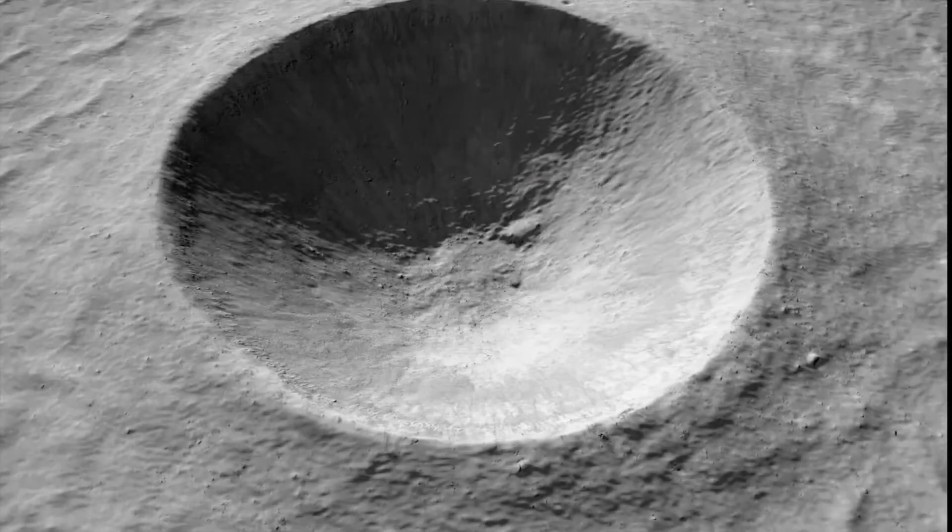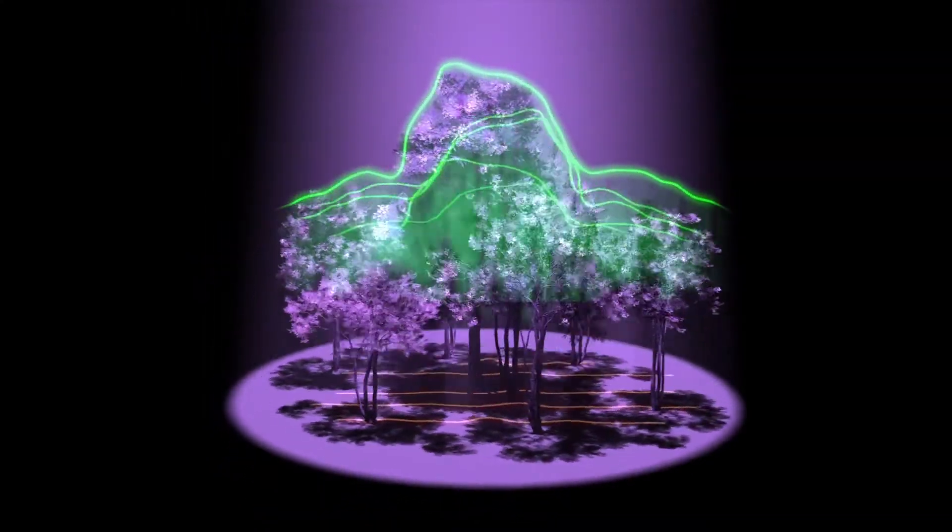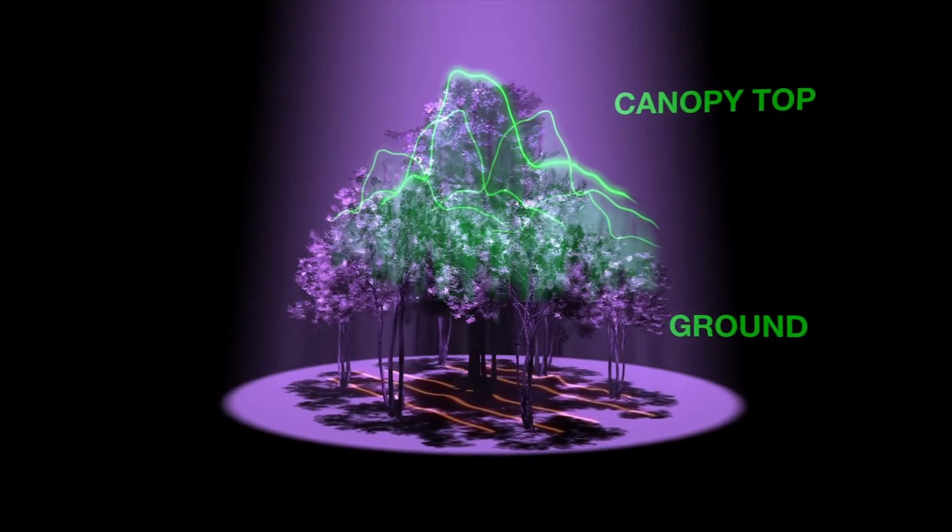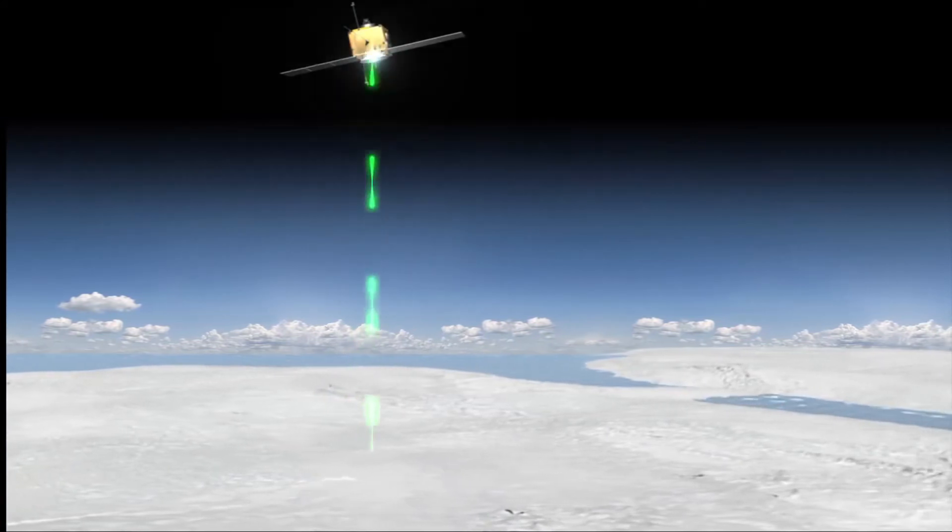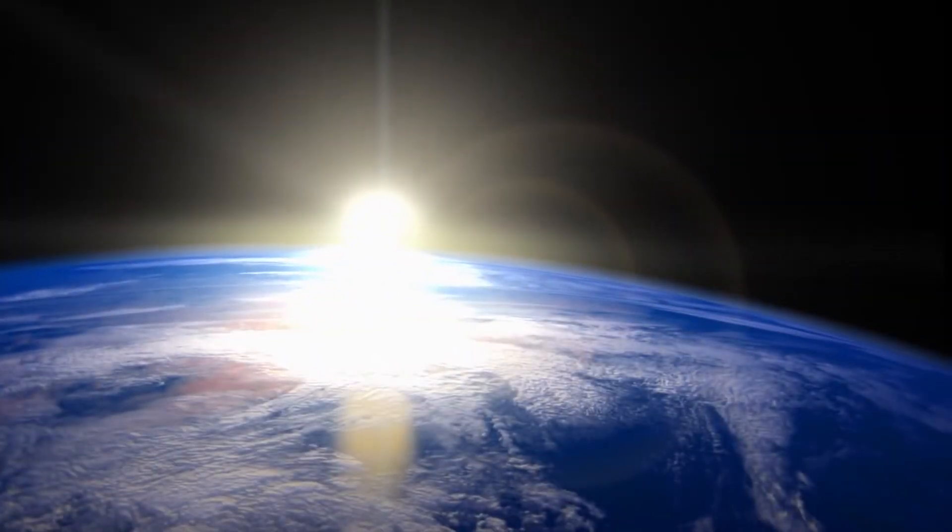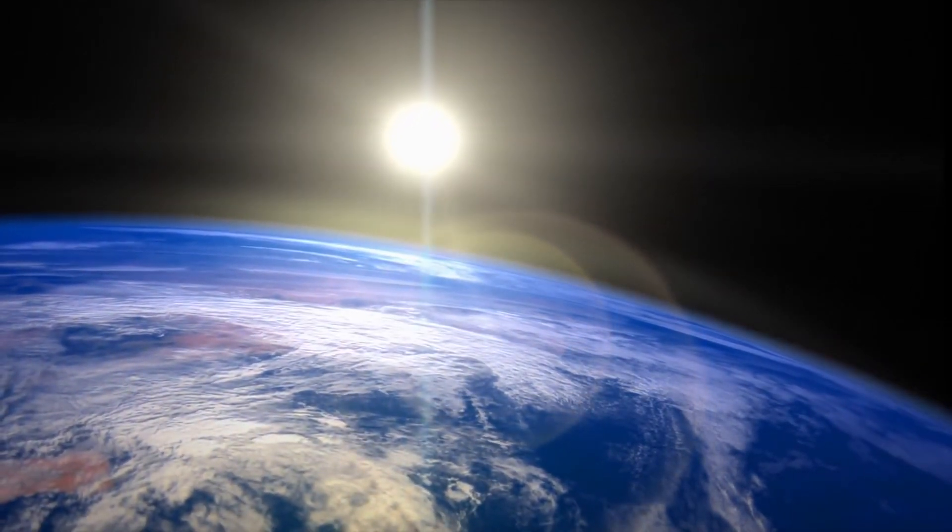But LiDAR is far more versatile than simply measuring the shapes of mountains and craters. Earth scientists, for example, use LiDAR to measure the height and density of the Earth's forests. Others use LiDAR to study small changes in the heights of the Earth's major ice caps over time. Still other scientists use LiDAR to study the composition and structure of Earth's atmosphere, as well as the atmosphere of other planets.